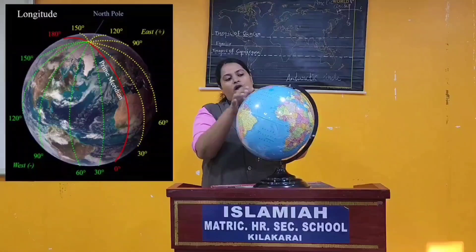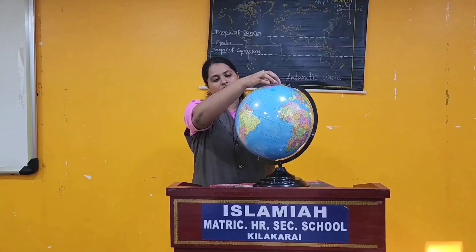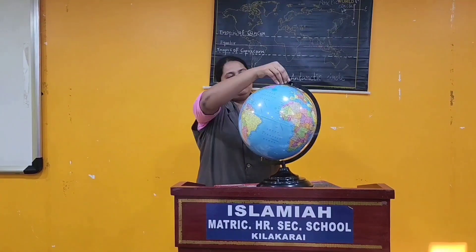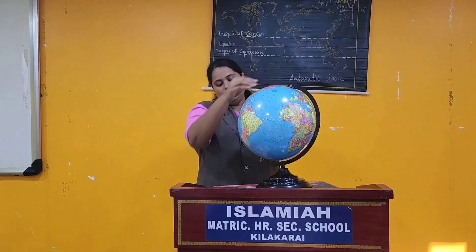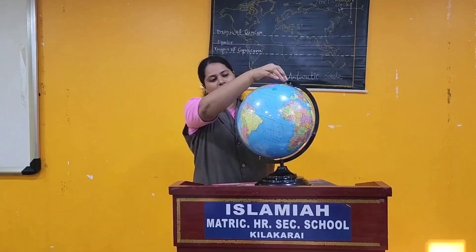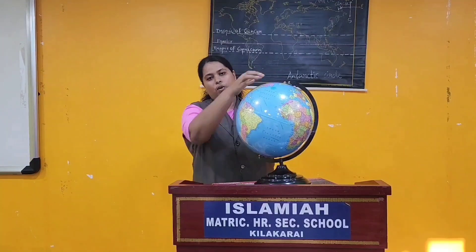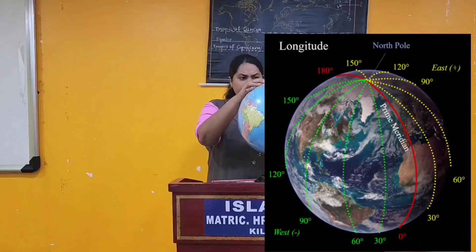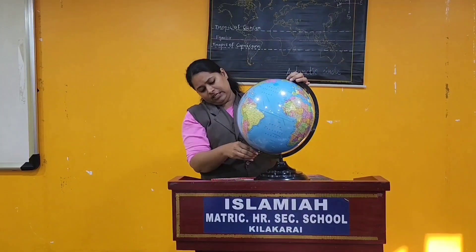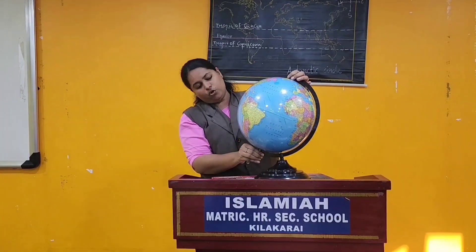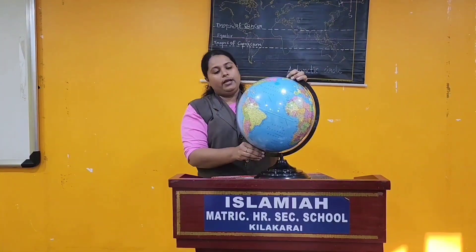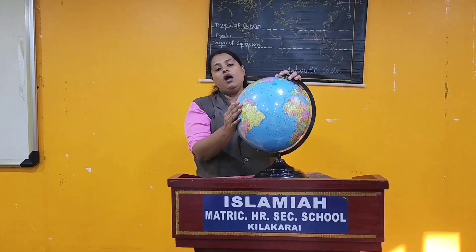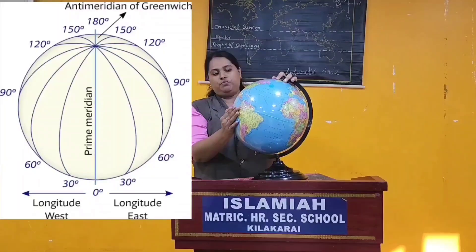Next is your longitude. Longitudes are nothing but your vertical lines which pass from your north pole to your south pole. From your north pole 90 degrees to your south pole lies your prime meridian, which is otherwise called your Greenwich meridian.